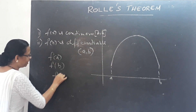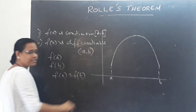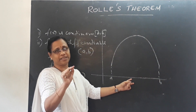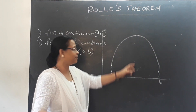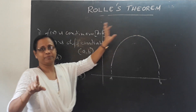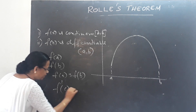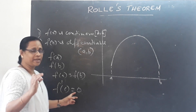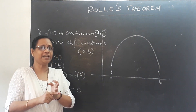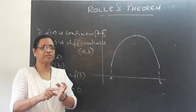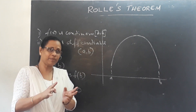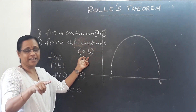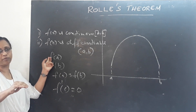Because f(A) and f(B) are equal, there exists a point C in (A, B) such that F'(C) is equal to zero. This is Rolle's Theorem. It has three conditions: first, f(x) is continuous on the closed interval [A, B]; second, f(x) is differentiable on the open interval (A, B); third, f(A) is equal to f(B).